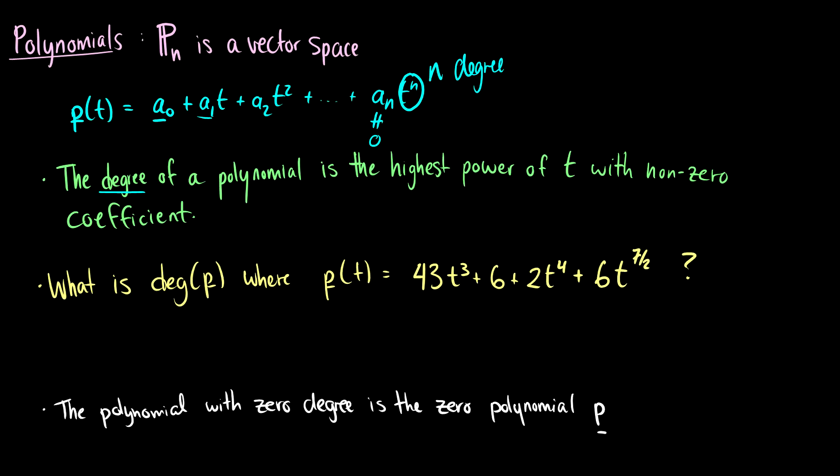what is the degree of p where we have the polynomial 43t cubed plus 6 plus 2t to the 4 plus 6t to the 7 halves? Well, this is the same thing as 3.5. Our highest power is t to the 4.